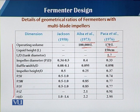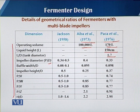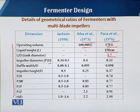Regarding the ratio P/D, where P is the width of the impeller and D is the diameter of the fermenter, this was reported by all three models. For Jackson 1958, the range is 0.34 to 0.5; for Iba et al it is 0.4; and for Pekka et al it is 0.33.